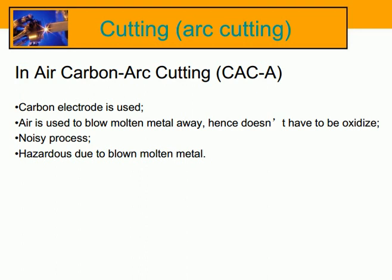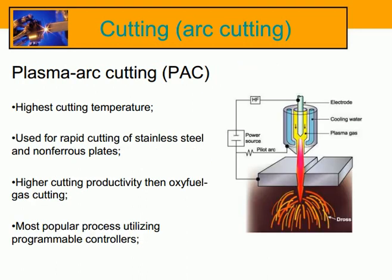This process can be hazardous due to blown molten metal. Plasma arc cutting (PAC) uses the highest cutting temperature and is used for rapid cutting of stainless steel and non-ferrous plates, offering higher cutting productivity than oxyfuel cutting.